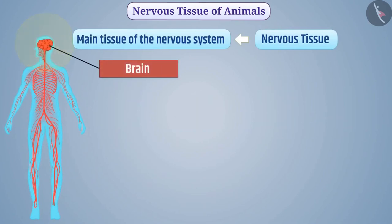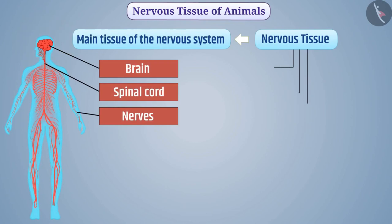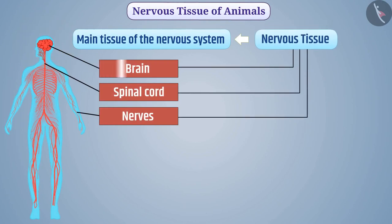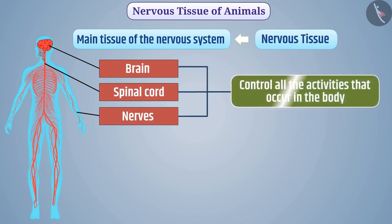Nervous tissue is the main tissue of the nervous system. Brain, spinal cord, and nerves are made up of nervous tissue. The brain, spinal cord, and nerves together control all the activities that occur in the body.